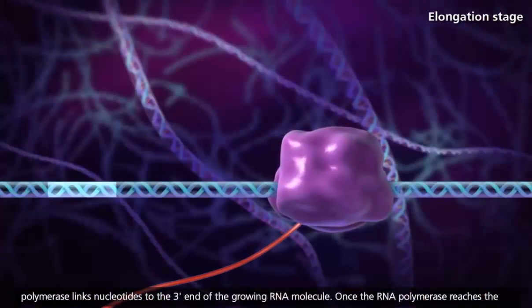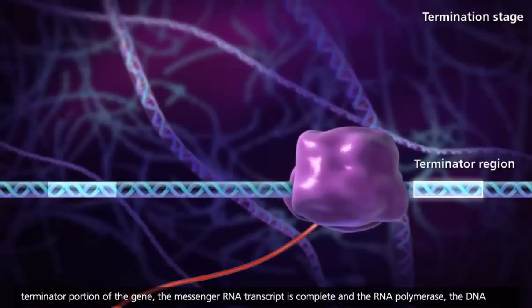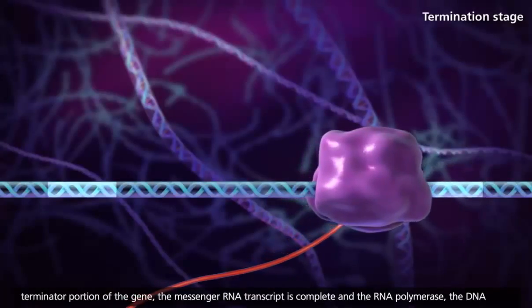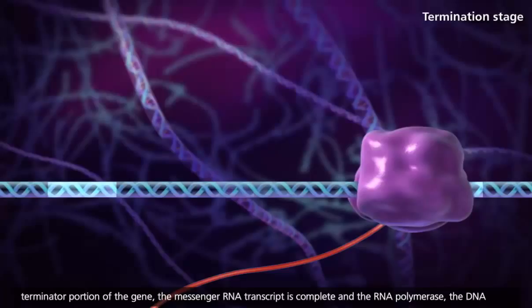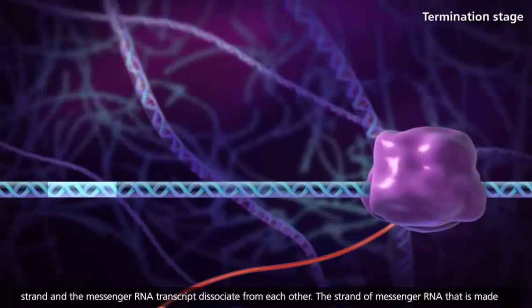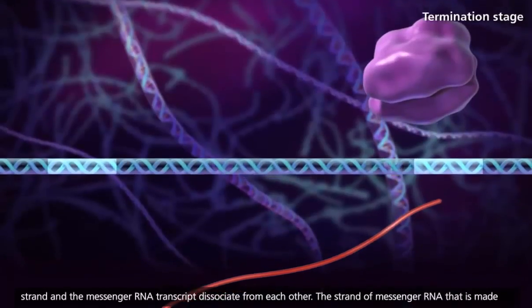Once the RNA polymerase reaches the terminator portion of the gene, the messenger RNA transcript is complete, and the RNA polymerase, the DNA strand, and the messenger RNA transcript dissociate from each other.